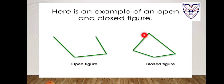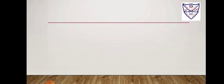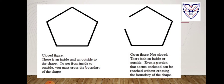It is also a simple curve. Why a simple curve? Because the definition of a simple curve is that a curve does not cross itself. So here there is a curve which is not crossing itself. Hence, it is also called a simple curve. Now, the first figure is a closed figure — there is an inside and outside to the shape, and to get from inside to outside, you must cross the boundary of the shape. The second is an open figure — it is not closed, so there isn't an inside or outside. Even a portion that seems enclosed can be reached without crossing the boundary of the shape. According to the definition, it does not end at the starting point, while the other figure ends at the starting point.